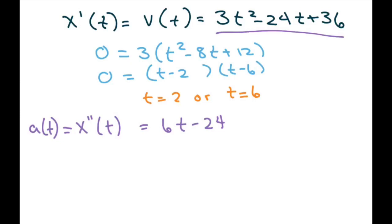Now, we need to check to see the acceleration is not 0. So when you set this to 0, you're going to get 6t minus 24 equals 0, so t equals 4. It's not t equals 2 and it's not t equals 6. So that means it is changing directions at t equals 2 or t equals 6.